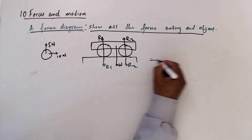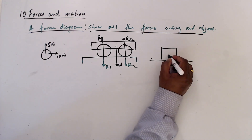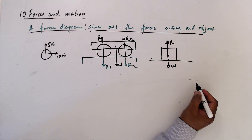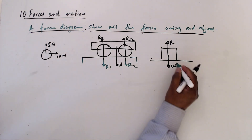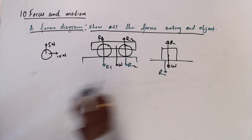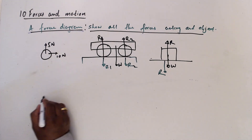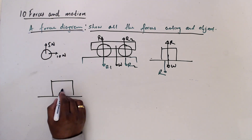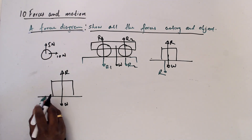So this is the weight. A block resting on a surface has a weight W downward and a normal reaction R upward. We don't need to consider the table separately for the block's force diagram. The table has its own R. So the block's force diagram shows weight W and normal reaction R.